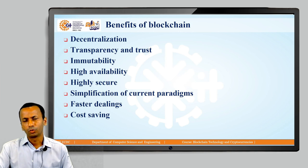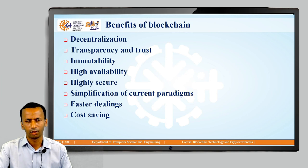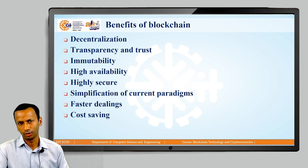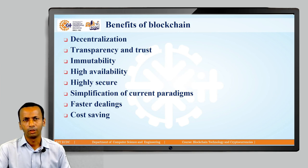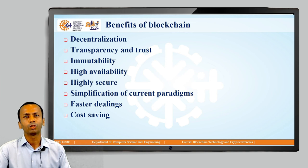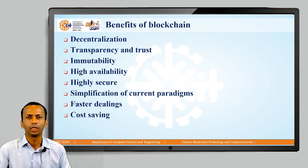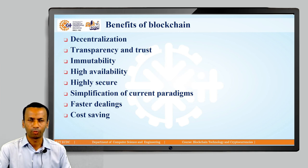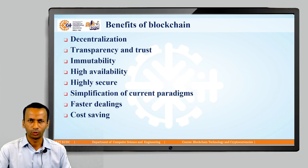For example, whenever we are transferring money from one account to another account — say you want to transfer money to your friend's account — banks are involved as an intermediary between you and your friend, and that bank acts as a controller responsible for completing the transaction. But in a blockchain network, there is no need for an intermediary like a bank. You can directly send money to your friend's account without any central controller or bank. That is what decentralization means.